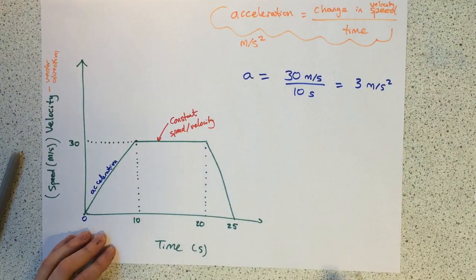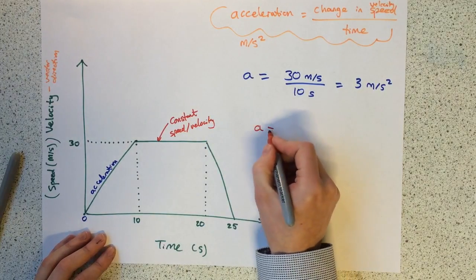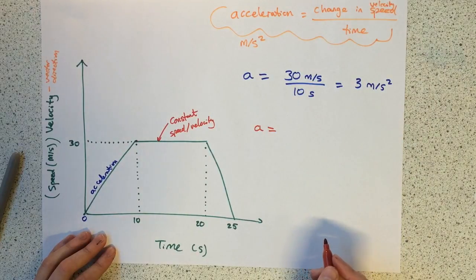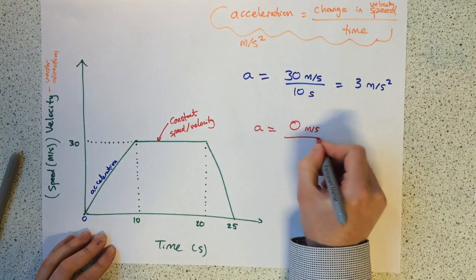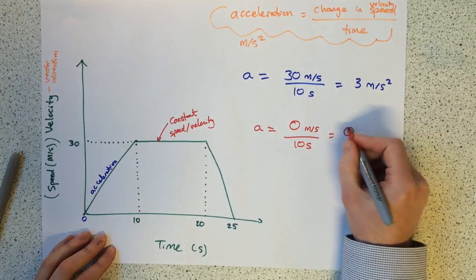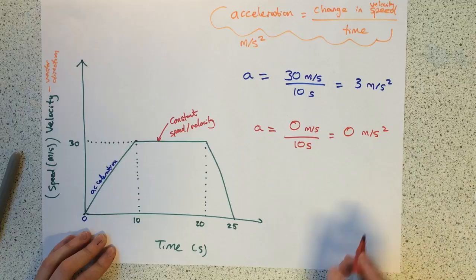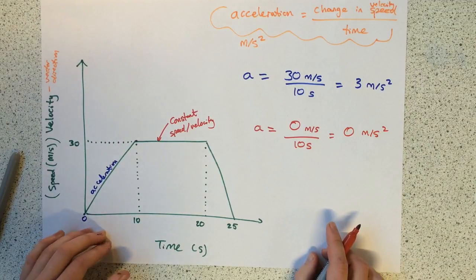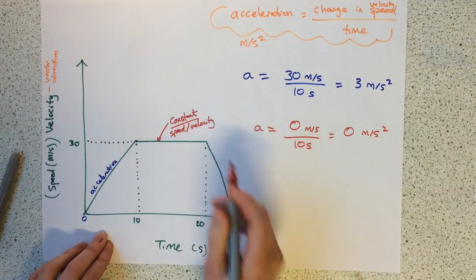Let's work out what the acceleration is there. The acceleration, the change in speed, is 0 divided by the time, 10 seconds. So acceleration there is 0 metres per second squared. That makes sense because it's not accelerating, it is constant.